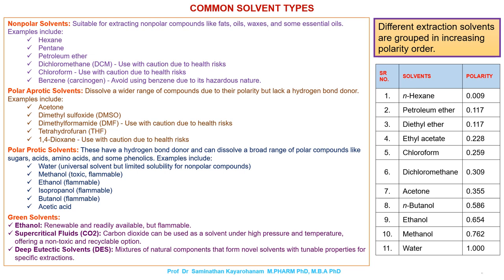Different extraction solvents are grouped in increasing polarity order: 1. N-hexane (0.009), 2. Petroleum ether (0.117), 3. Diethyl ether (0.117), 4. Ethyl acetate (0.228), 5. Chloroform (0.259), 6. Dichloromethane (0.309), 7. Acetone (0.355), 8. N-butanol (0.586), 9. Ethanol (0.654), 10. Methanol (0.762), 11. Water (1.000).